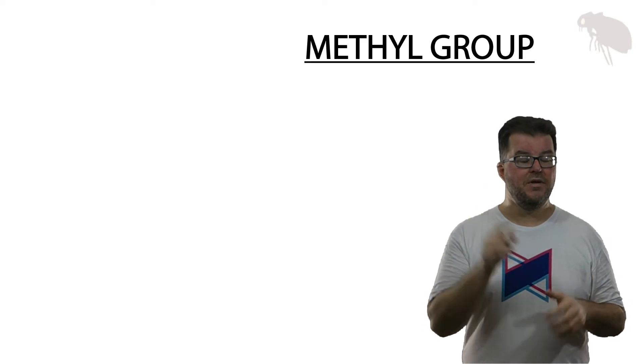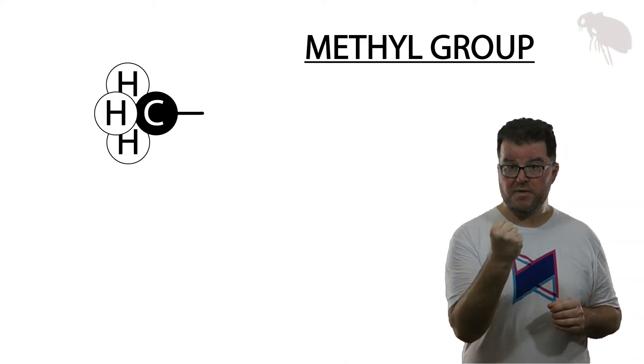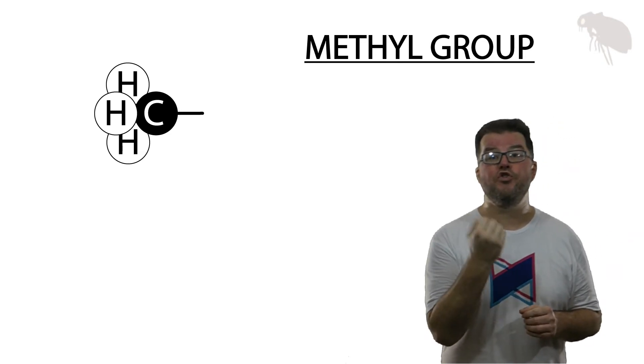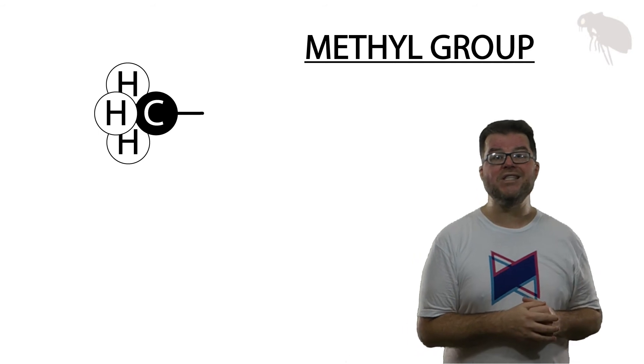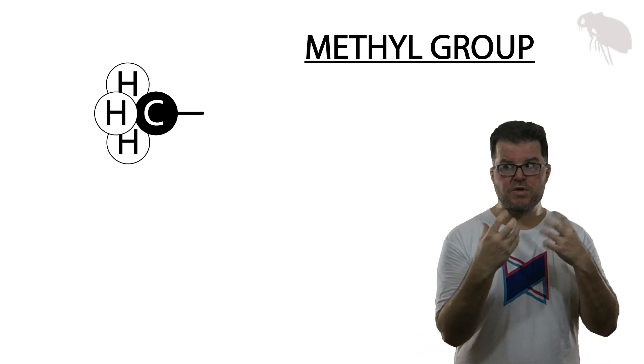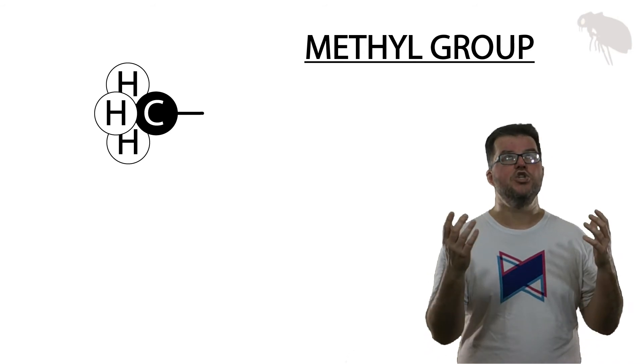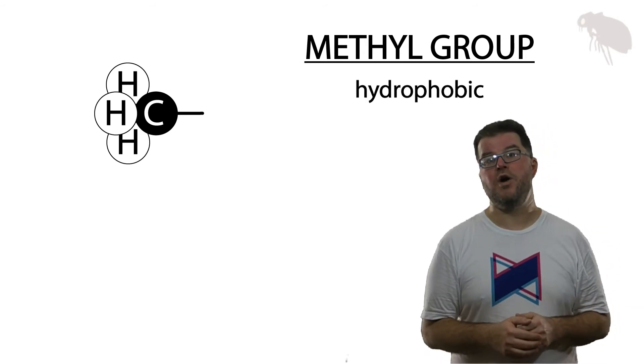First example is the methyl group. Methyl groups are composed of a single carbon covalently bound to three hydrogen atoms. Now with it only containing carbon and hydrogen, which form non-polar bonds with each other, methyl groups are hydrophobic. That's their chemical property.